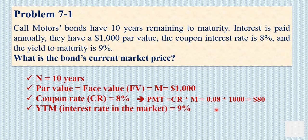The YTM, which is the interest rate in the market, is equal to 9%. We now have to calculate the bond price today, which is the bond value today, or V0.